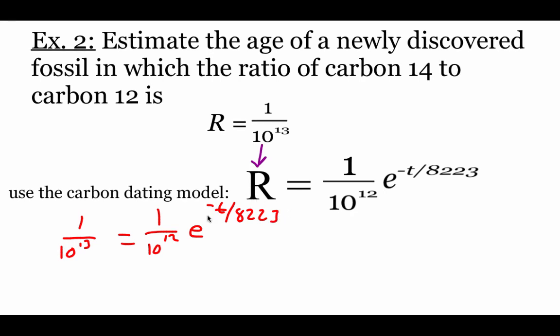Now this is a lot like that last model where we're trying to get t all by itself. Right now we've got 1 divided by 10 to the 12th power. So in order to move that, I'm going to multiply by 10 to the 12th power so those things cancel out. Now what's going to happen here with this 10 to the 12th times 1 over 10 to the 13th? 12 of these 10s will cancel out with 12 of the 10s on bottom, but we still get 1 over 10 because there's 1 ten left over. Equals e to the negative t divided by 8,223.